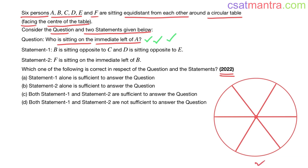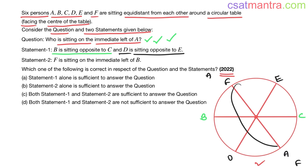Statement 1: B is sitting opposite to C. We can take B and C's positions here. D is sitting opposite to E — say D is here, E is here. Now A can be here and F can be here in one case, or F can be here and A can be here in another case.